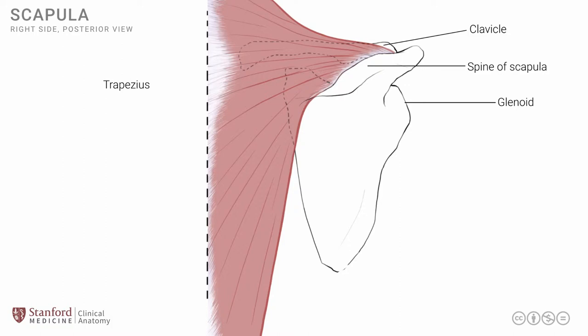Note that the fibers of the trapezius have varying angles of inclination. The fibers that are more superior go downwards and laterally, whereas the fibers in the inferior part of the trapezius go upwards and laterally. Hence, the fibers of the trapezius have slightly different directions of pull when they contract.